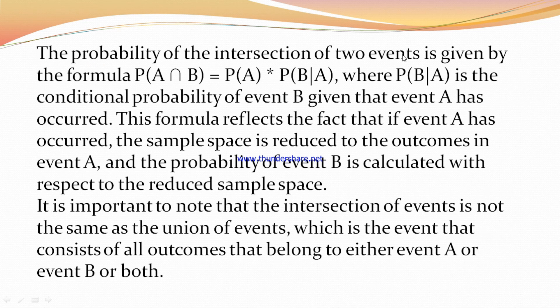The probability of the intersection of two events is given by the formula P(A ∩ B) = P(A) × P(B|A).